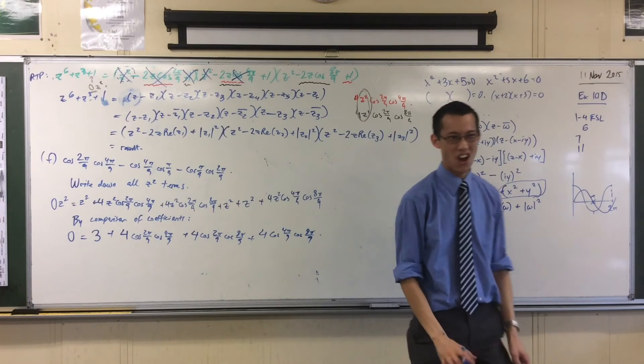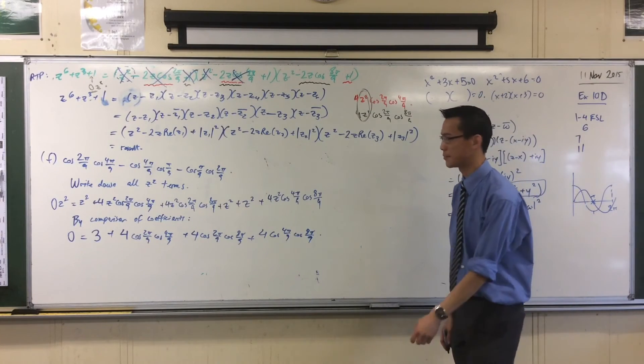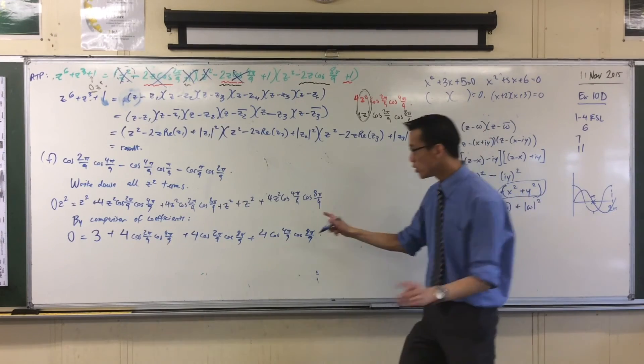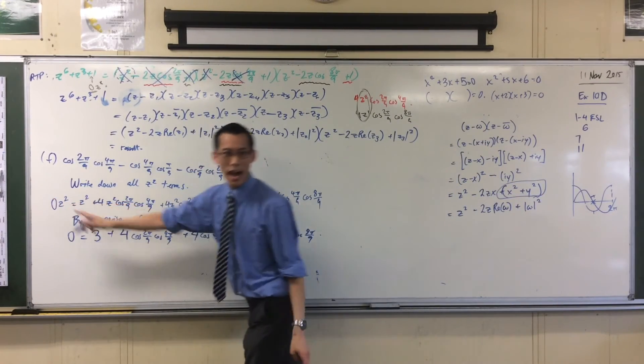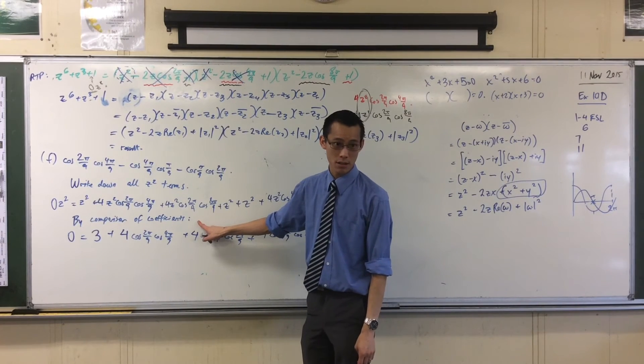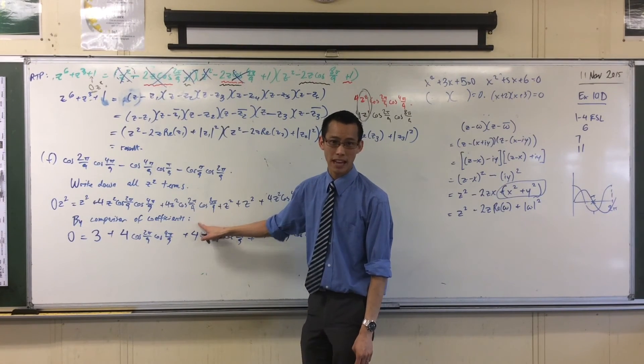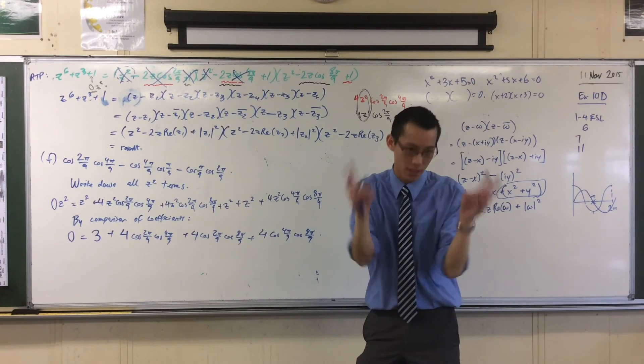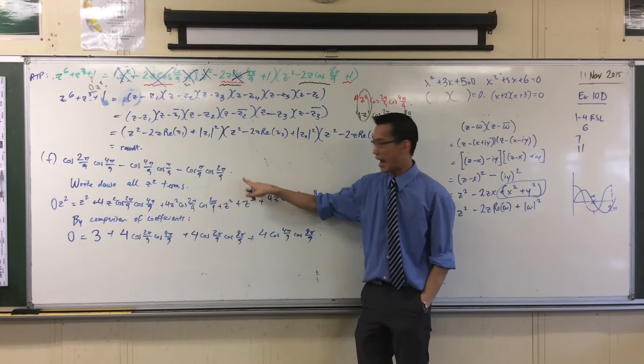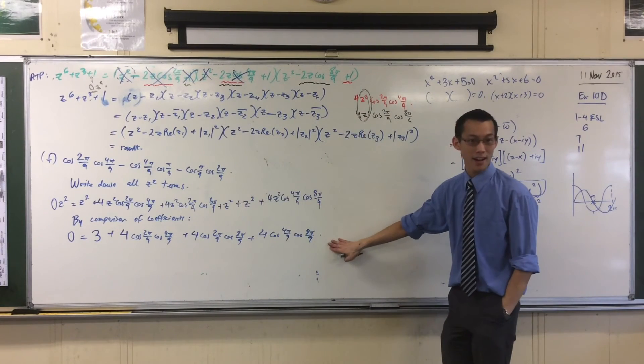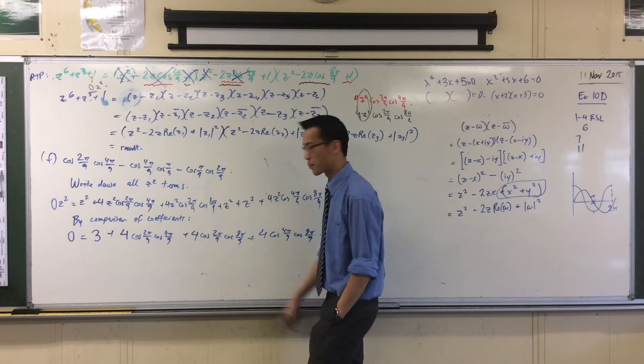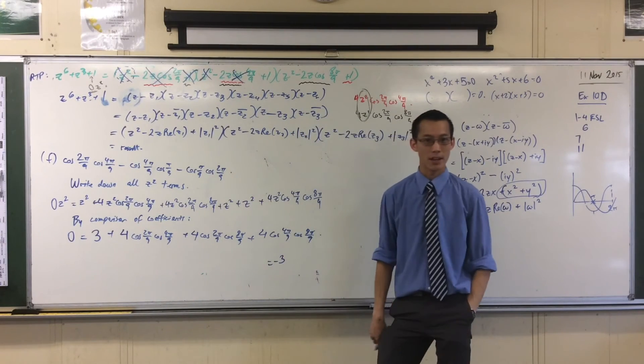Now I'm almost there. I only have to do a couple of things. Do you just put z at the end? No, no. I have no more z's. All of these are z-squared terms. I haven't divided. I'm comparing the coefficients. That's what I'm doing. I can actually divide through. But that's not really what I'm doing. This is what I'm really doing.